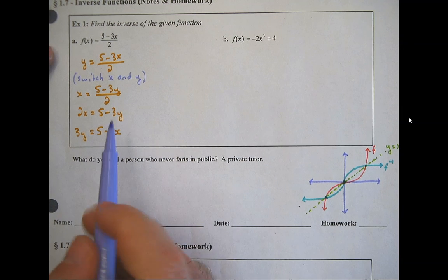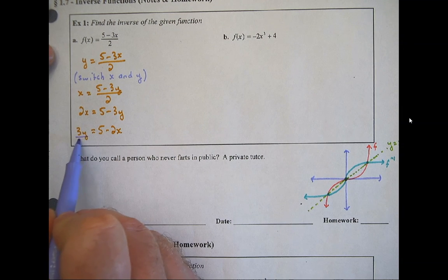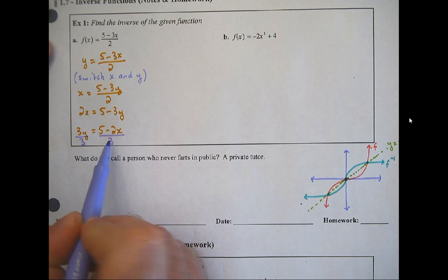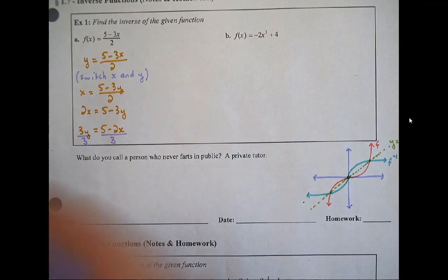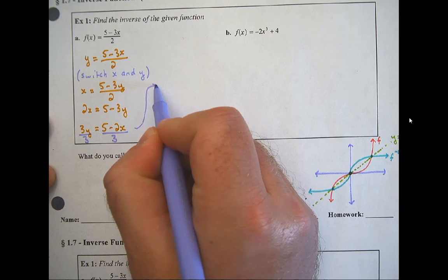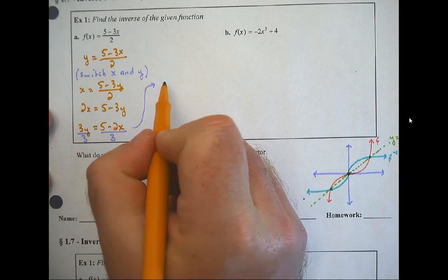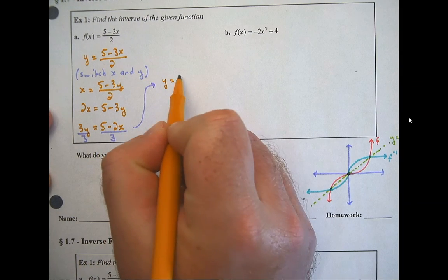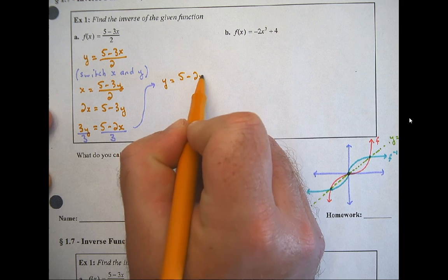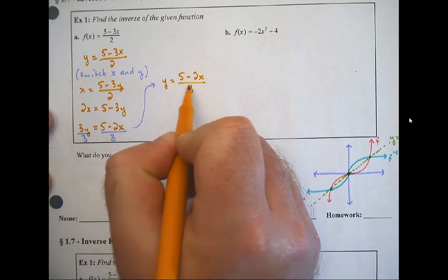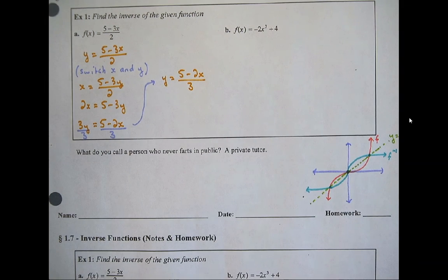Who's keeping y from being by himself is the 3. So now I'm going to divide everything by 3. And we get y equals 5 subtract 2x over 3. And you could split those apart if you wanted to, or you could leave it. I'm okay with leaving it.